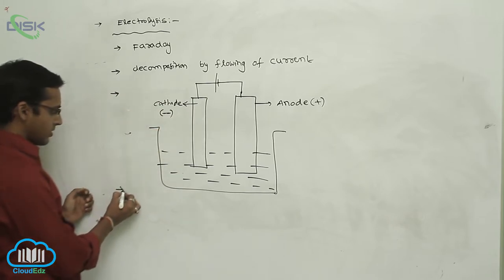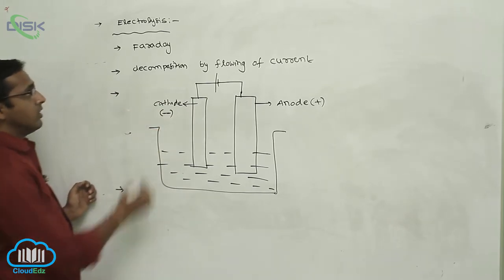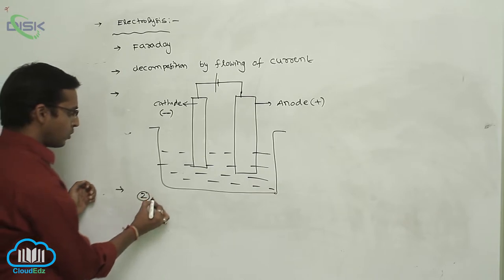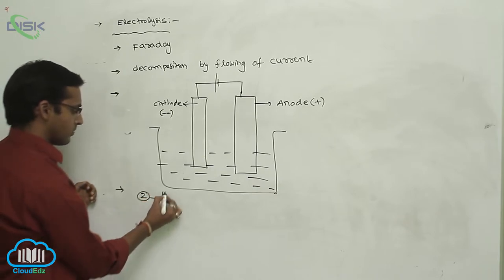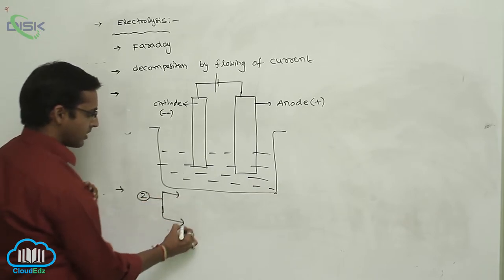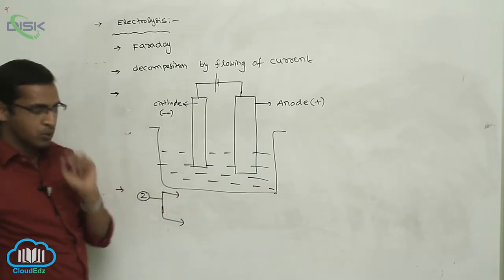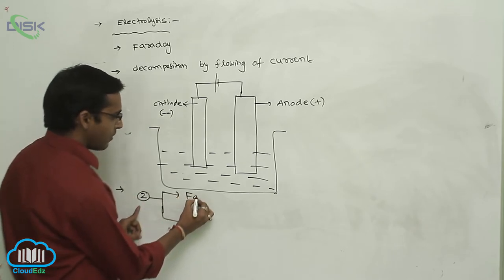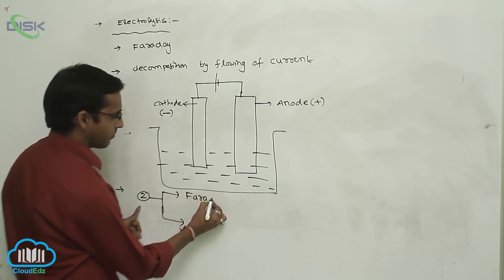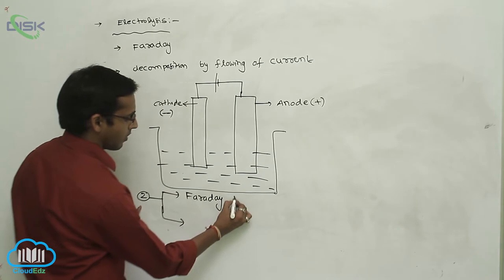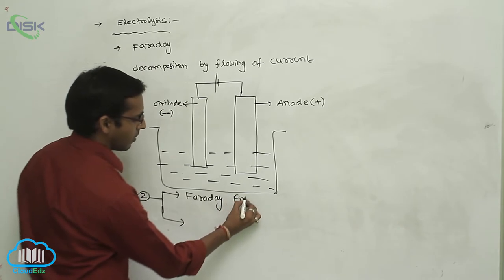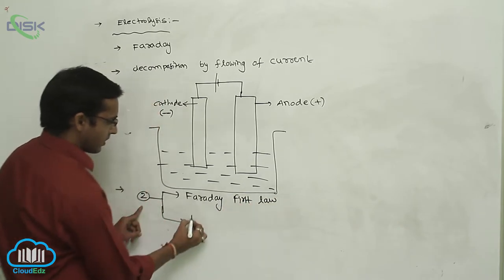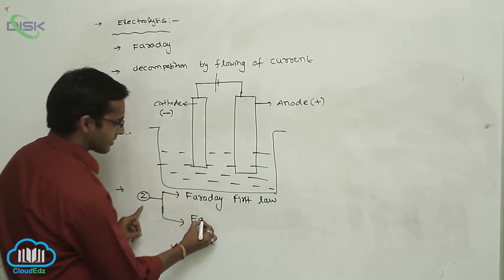Electrolysis is classified into two laws. The scientist Faraday proposed two laws: the first is Faraday's First Law, and the second is Faraday's Second Law.